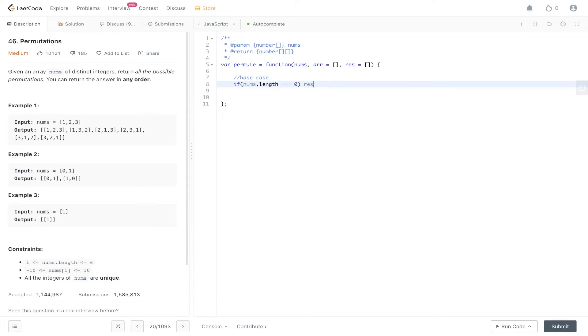So if nums.length is equal to zero, what we do is we push into res the array spread. And the reason we use the spread operator is to remove these brackets surrounding the numbers so that we don't have multiple array brackets.